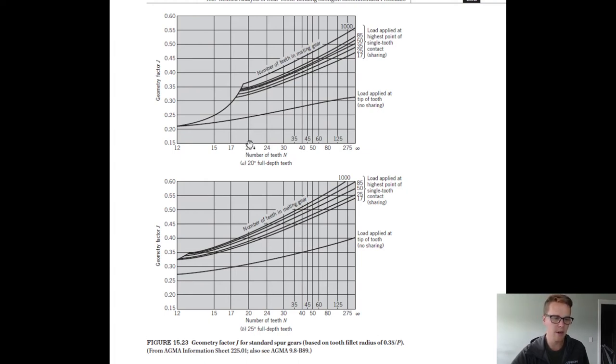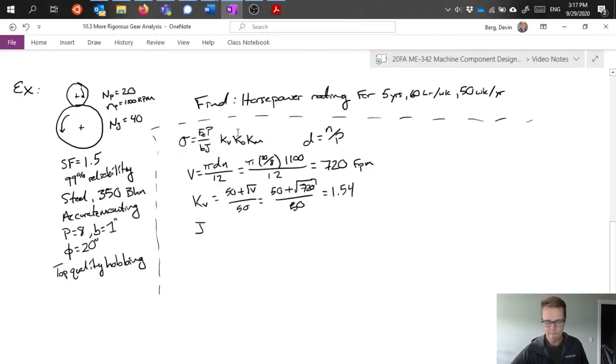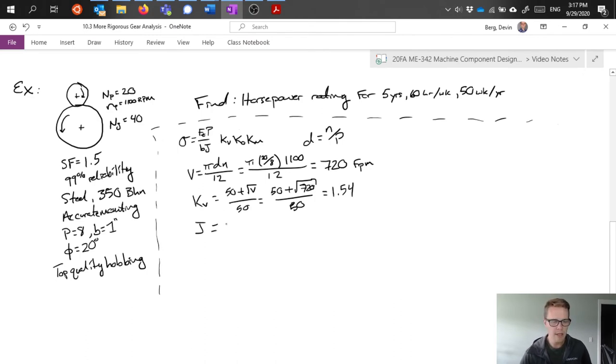So I have an x-axis here of 20. I'm going to go up. My mating pair had 40. So the lines all get really close together here and it gets kind of hard to read. But what we could do is assume worst case scenario, we might say that there's no load sharing, which is kind of a less likely but also worst case scenario situation. If we do that, we could pick this line here, which is 0.24 approximately. We'll go ahead and say 0.24.